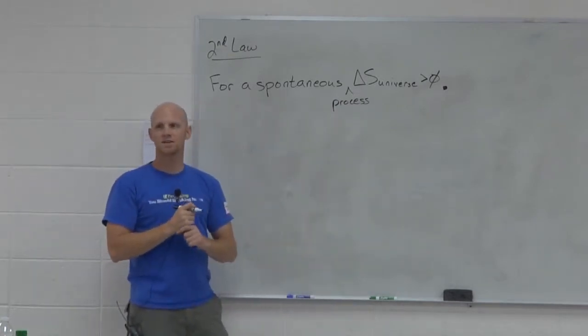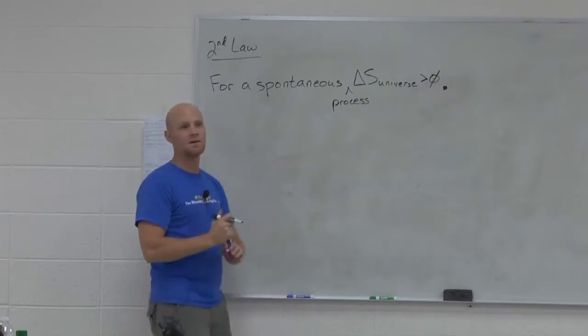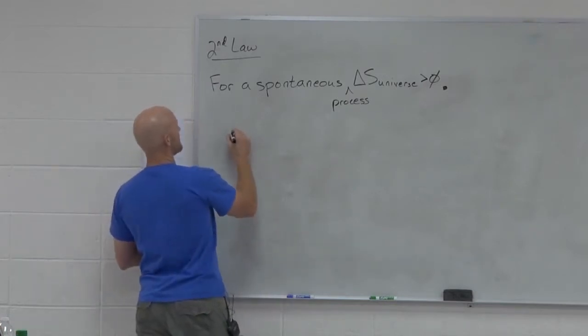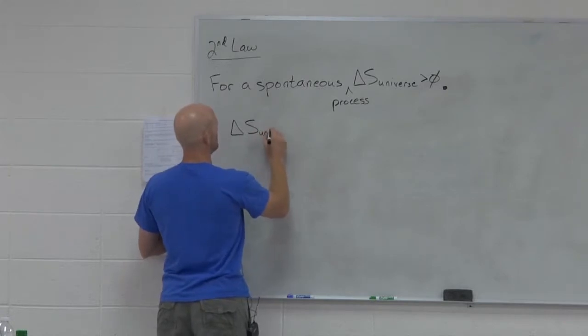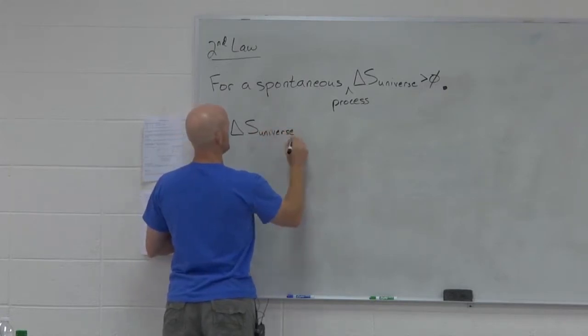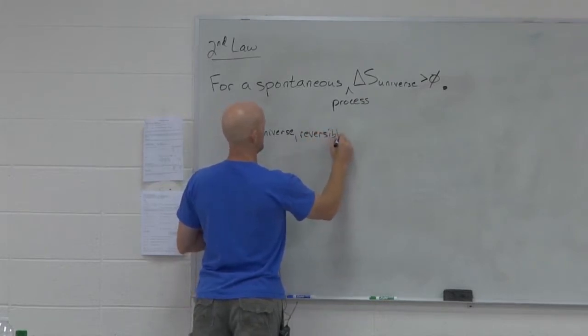This is for a spontaneous process. So and for a spontaneous process, we'll see that means processes that have a delta G value that's negative later on. However, I'm going to tell you that delta S of the universe for a reversible process is zero.